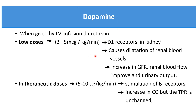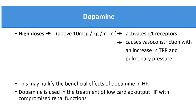Dopamine is also a positive inotropic drug and it acts on various receptors causing various actions. At lower doses of 2 to 5 micrograms per kg per minute, it acts as a diuretic substance, acting on D1 receptors on the kidney causing dilation of renal vessels and increasing GFR and renal blood flow, improving urinary output. At the therapeutic dose of 5 to 10 micrograms per kg per minute, it stimulates beta-1 receptors on the heart and increases cardiac output, while total peripheral resistance remains unchanged.